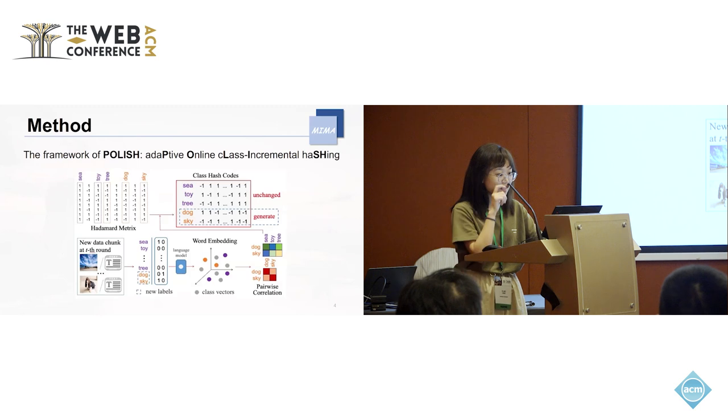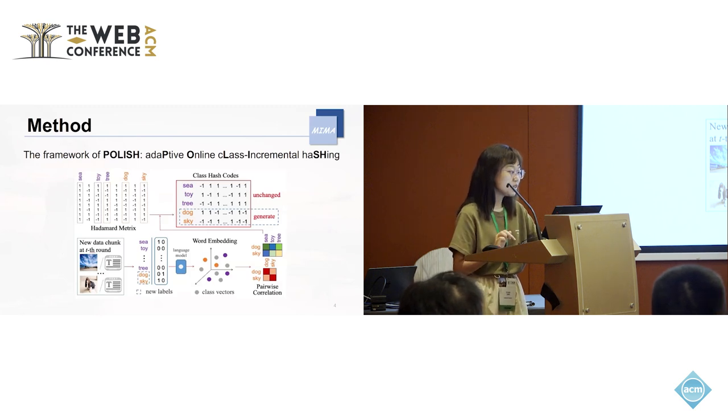To address this challenge, we introduce a novel cross-model online hashing method named Polish. This figure is our framework. As we can see, Polish uses class correlation and semantic information obtained by language model to generate the representation of class labels.